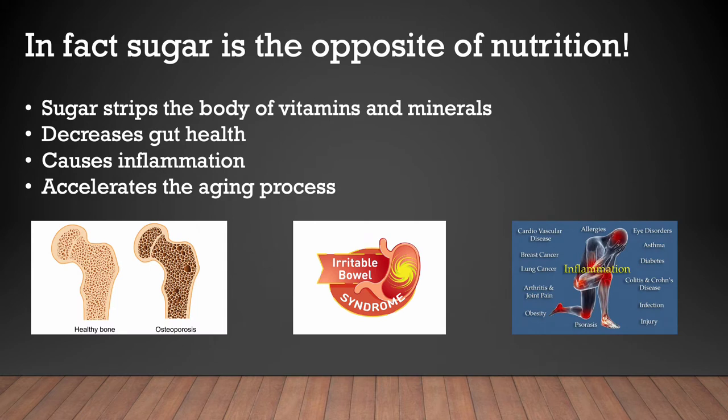But sugar is in fact the opposite of nutrition. Sugar strips the body of vitamins and minerals, which causes things like osteoporosis and tooth decay. It decreases gut health and increases irritable bowel syndrome. It causes inflammation, which is associated with cardiovascular disease, breast cancer, lung cancer, arthritis, psoriasis, injury, infection, Crohn's disease, diabetes, and more. Overall consumption of sugar accelerates the aging process.